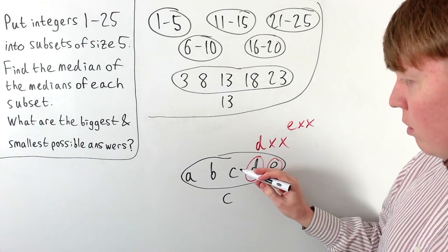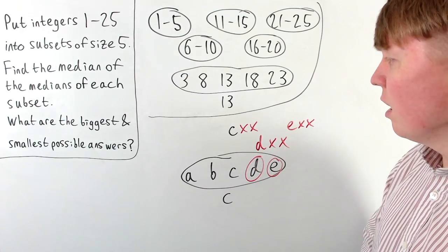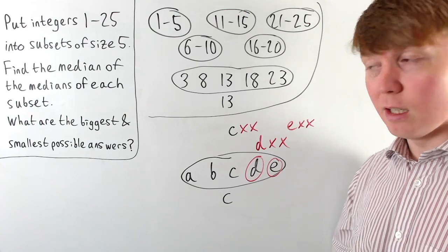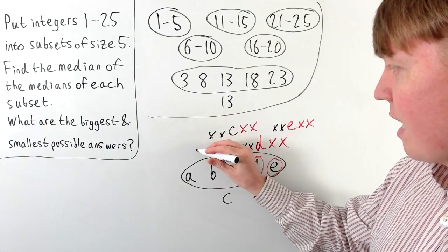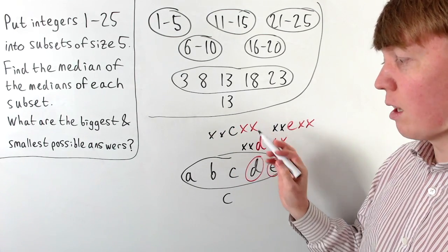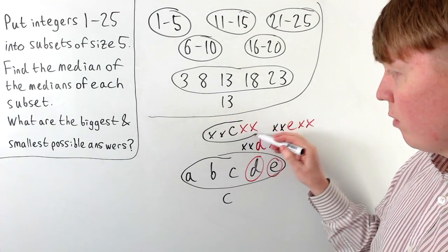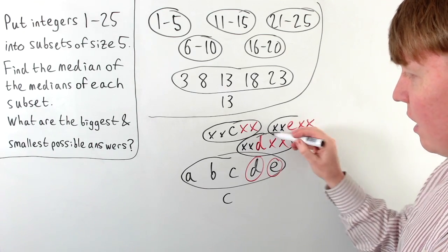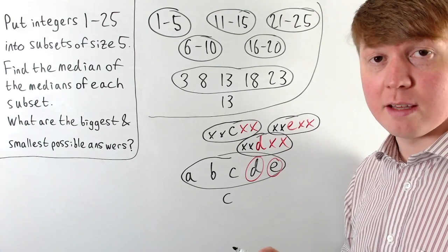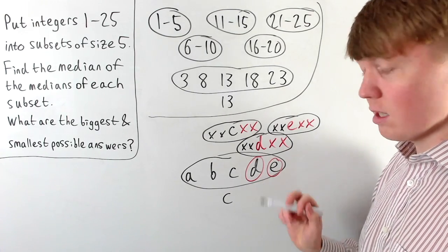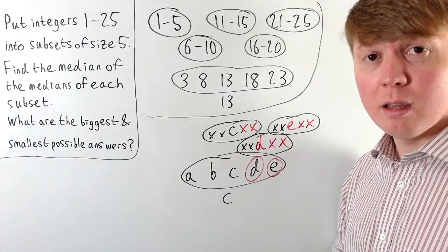We can go even further, because D and E in their previous subsets each need to have two more values which are bigger than them in order for them to be the median of that subset. Similarly, our final median C also needs to have two values bigger than it for that to be the median of its subset. So in total, we definitely need eight values bigger than our final median C.